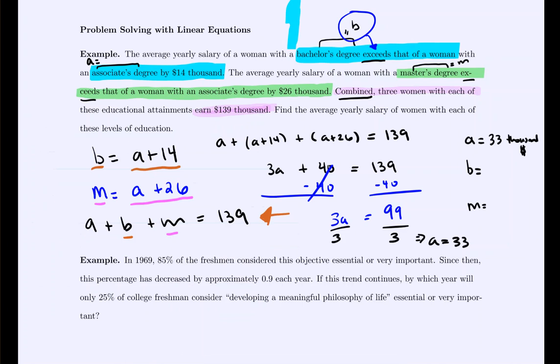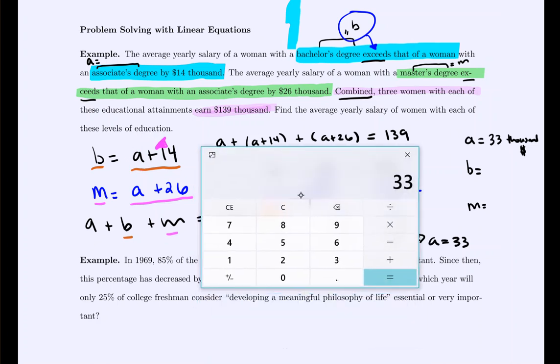And once you know one of the unknowns, then pretty quickly you can find the other unknowns. Because specifically, we had a relationship. We knew that whatever A is, if you add 14, that gives you B. So B is $47,000. And then for the master's degree, we said whatever A is, which is 33, if you add 26, that gives you the master's. So 33 plus 26, and that would be $59,000.